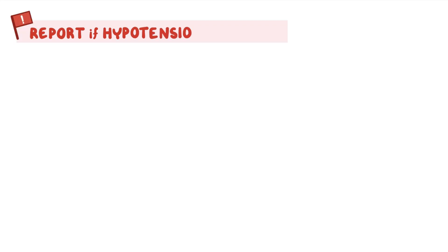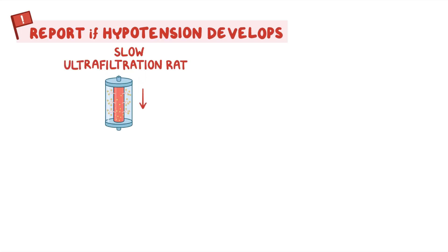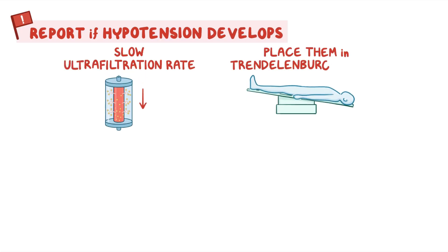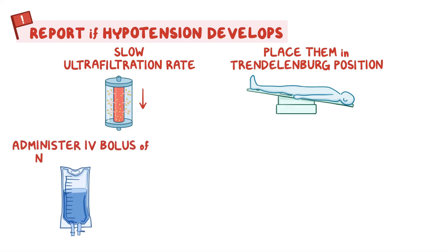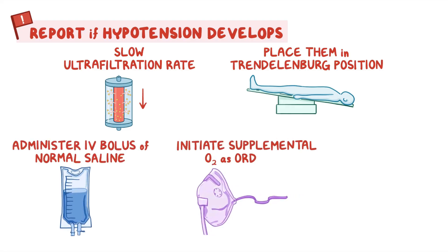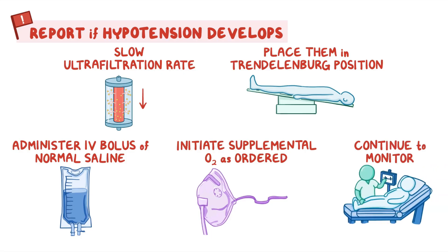During hemodialysis, keep a close eye on your client to prevent complications. Immediately report if hypotension develops. Then slow the ultrafiltration rate and place them in the Trendelenburg position. Administer an IV bolus of normal saline, initiate supplemental oxygen as ordered, and continue to monitor them until they are stable.